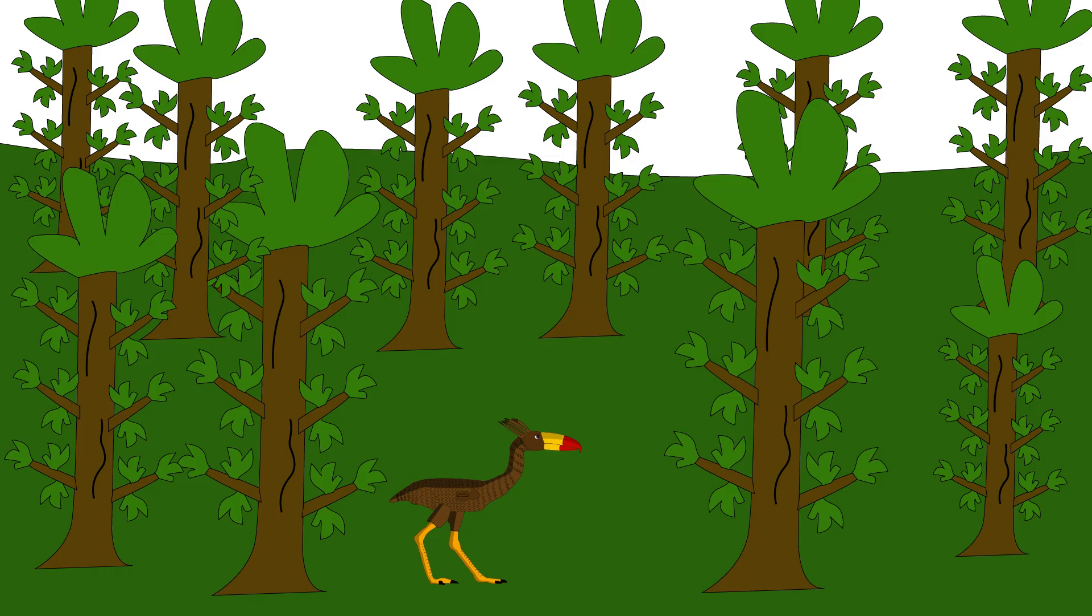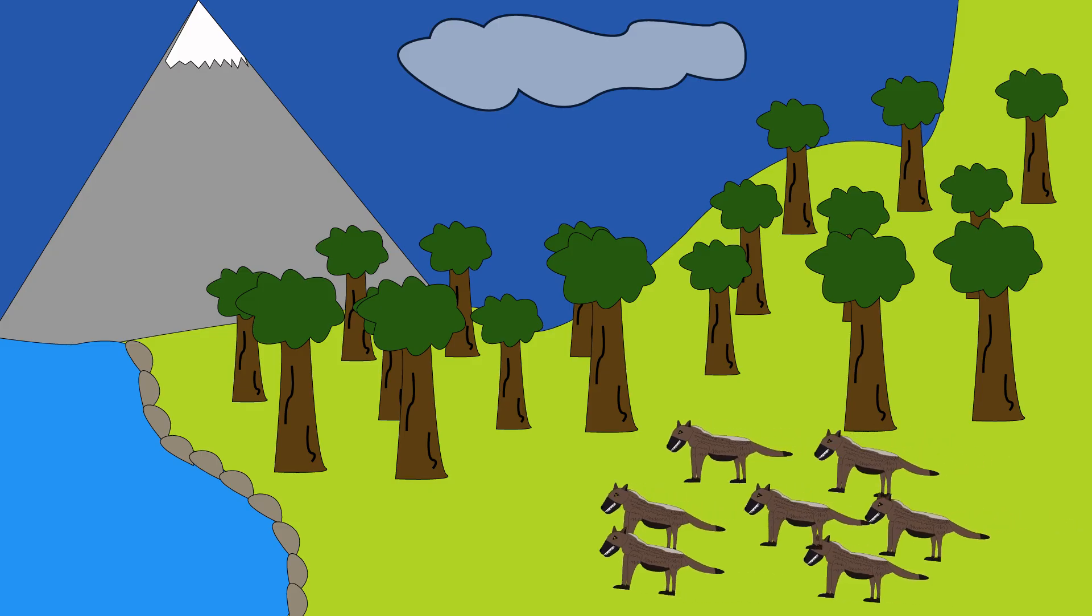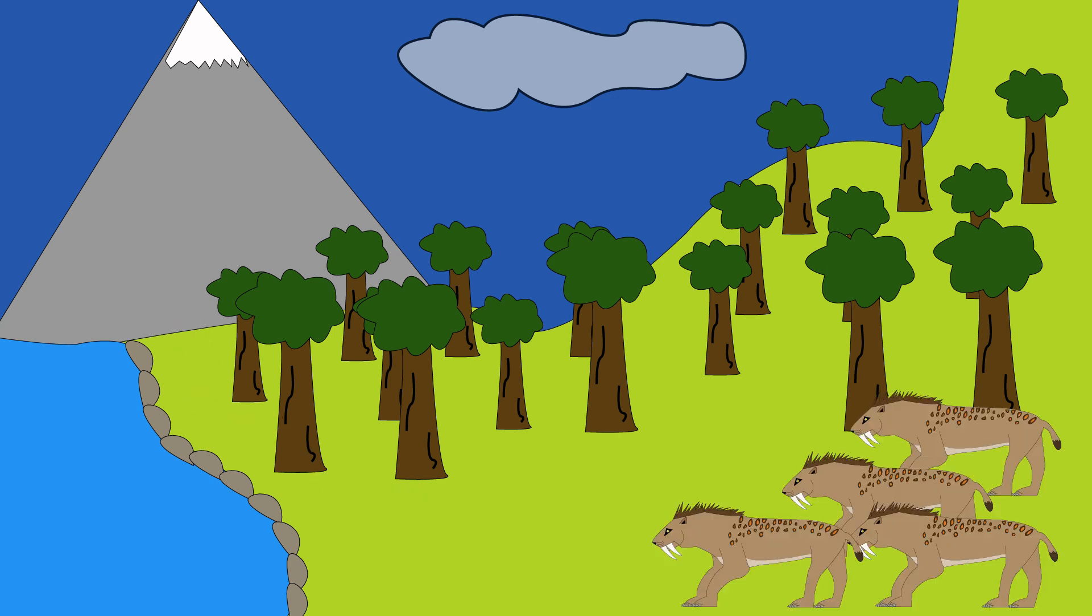But even the strongest have weaknesses. You can't climb trees. You can't swim well. You're trapped on the forest floor. And the forest is changing. Predators from the north—large cats, dogs—are migrating into your territory.